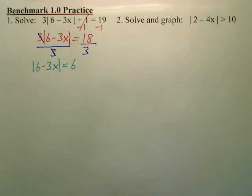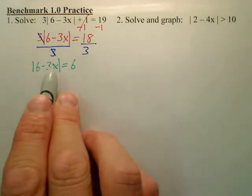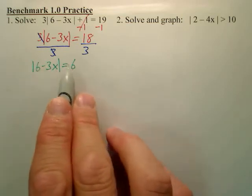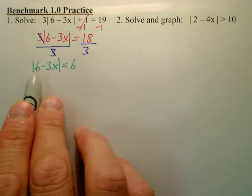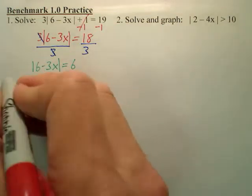Now, once I have it like that, I can solve this by making two equations, because what's inside the absolute value is going to equal 6, as well as what's inside the absolute value could also equal negative 6, because the absolute value would then make it positive.